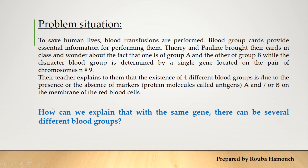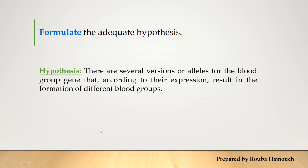The problem is written in the form of a question. To answer the problem, we formulate several hypotheses. Formulate one adequate hypothesis: how can you explain the fact that one single gene may lead to the appearance of different characters? The hypothesis is: there are several versions or alleles or forms for the blood group gene that, according to their expression, result in the formation of different blood groups. Since we have many alleles — many forms of the same gene — this leads to the appearance of many characters or phenotypes.